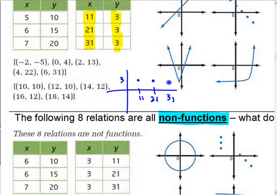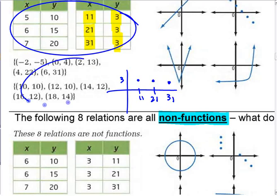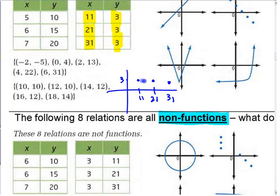If you try and draw a graph for that, 11 is 3 and 21 is 3 and 31 is 3. If you're ever not sure from a table or numbers, just draw the thing if you want. That's a horizontal line. It doesn't have to pass a horizontal line test, has to pass a vertical line test.